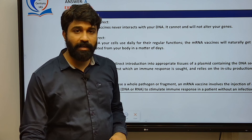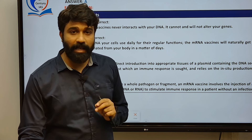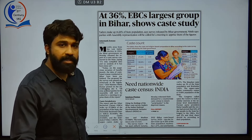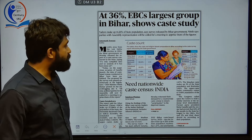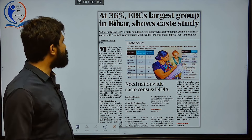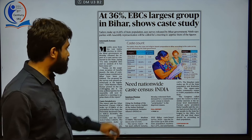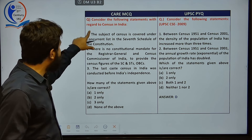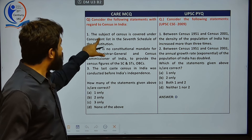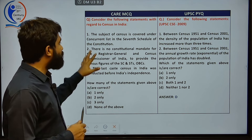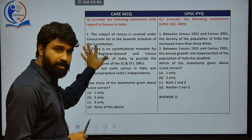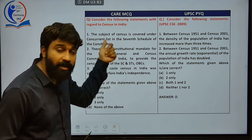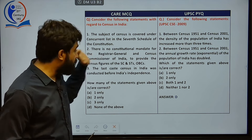The next article is about Other Backward Classes. Bihar government recently released a caste census report — EBCs are the largest group in Bihar at around 36%. Regarding the census in India, census is covered under Entry 69 of the 7th Schedule — the Union List — not the concurrent list. That statement saying it is under the concurrent list is wrong.